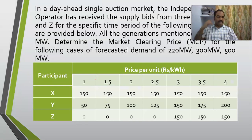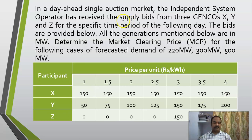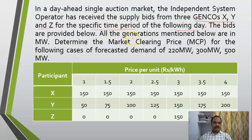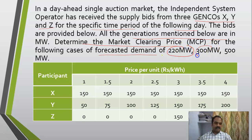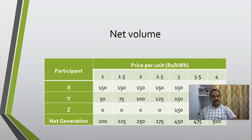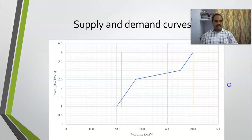Now in some cases you will encounter a single auction market where the independent system operator has received supply bids only from three generating posts. He has received only supply bids for a specific time period of the following day. The question asks us to determine the market clearing price for the following cases of forecasted demand — the demand is not given explicitly but there is a forecast of a particular amount.